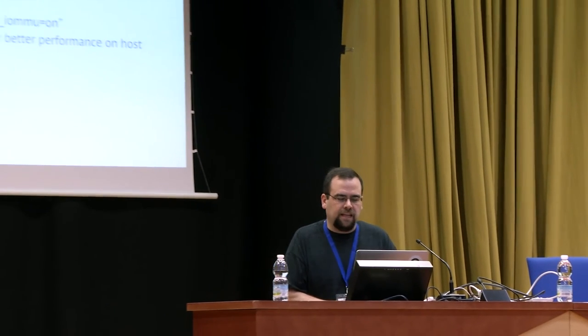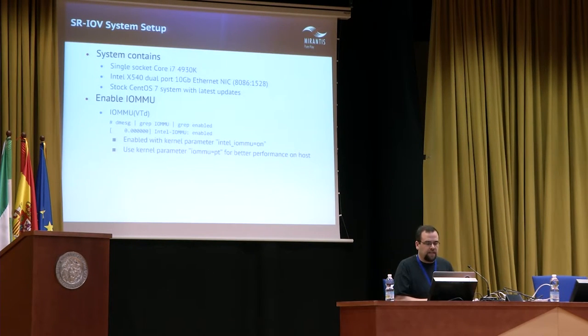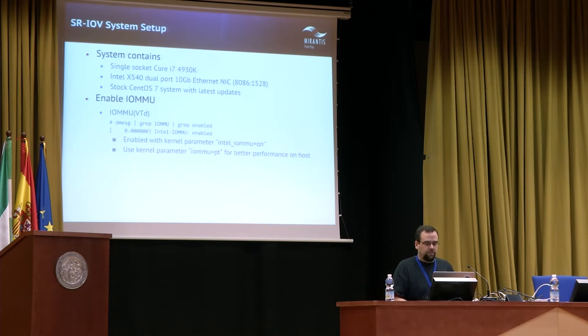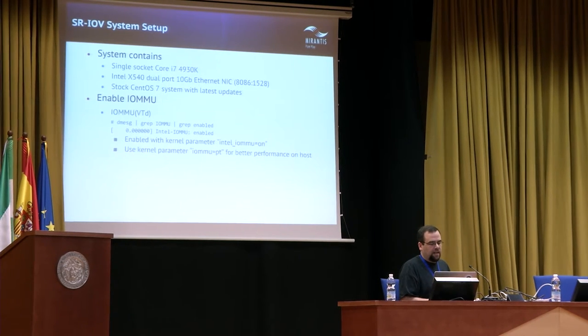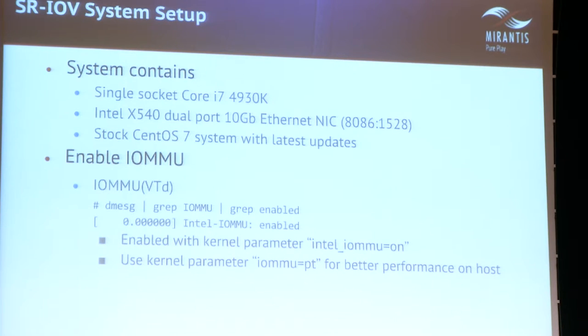Getting back to the demo: the system I'm using is a single socket Core i7-4930K with an Intel X540 dual port 10-gigabit NIC, ID 8086:1528. The OS is the latest CentOS 7, version 7.2 with latest updates. As far as system setup, I'm running with IOMMU enabled. Running the command 'dmesg | grep IOMMU | grep enabled' should give you that output — 'Intel IOMMU enabled.' If you're running AMD, there's also a means of checking. That's the key bit: if you're running SRIOV and plan to do direct assignment, you do need an IOMMU.